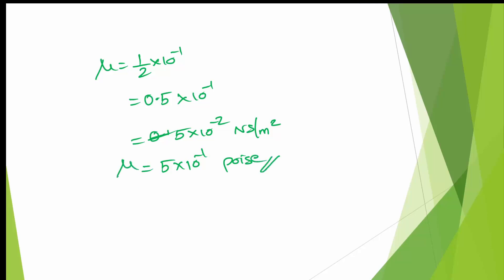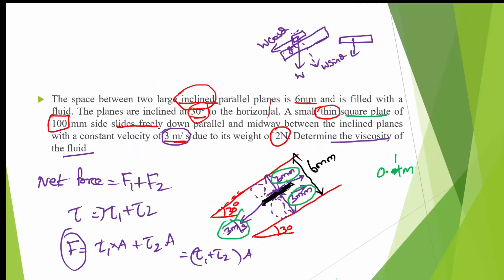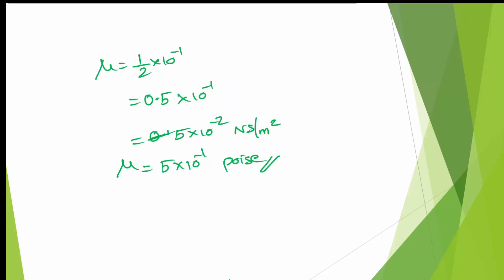The final answer is that the dynamic viscosity of the fluid is 5×10⁻¹ poise, or 0.5 poise. To summarize: we found the shear forces on both surfaces of the plate, equated the total shear force to the weight component along the incline (2cos60°), and solved for viscosity. We will solve more questions in later videos. Thank you, happy learning.